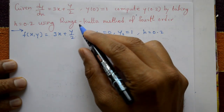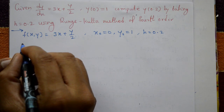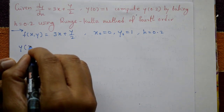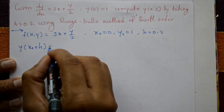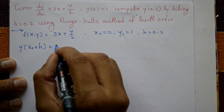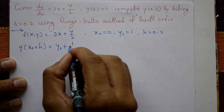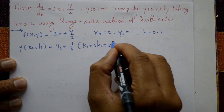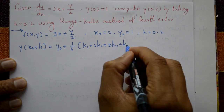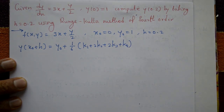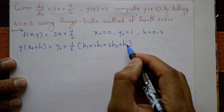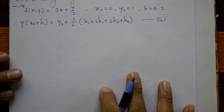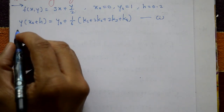Using the Runge-Kutta method, the formula is: y(x naught + h) = y naught + (1/6)(k1 + 2k2 + 2k3 + k4). This is equation number one. We need to find k1, k2, k3, and k4, then substitute.